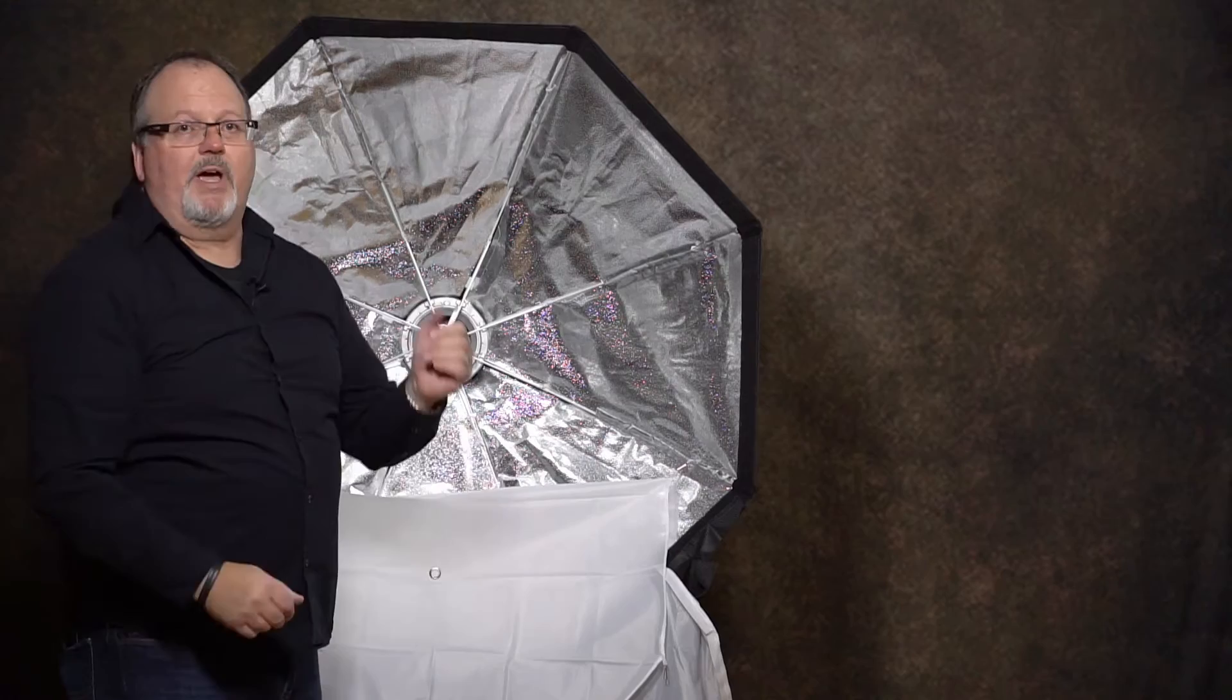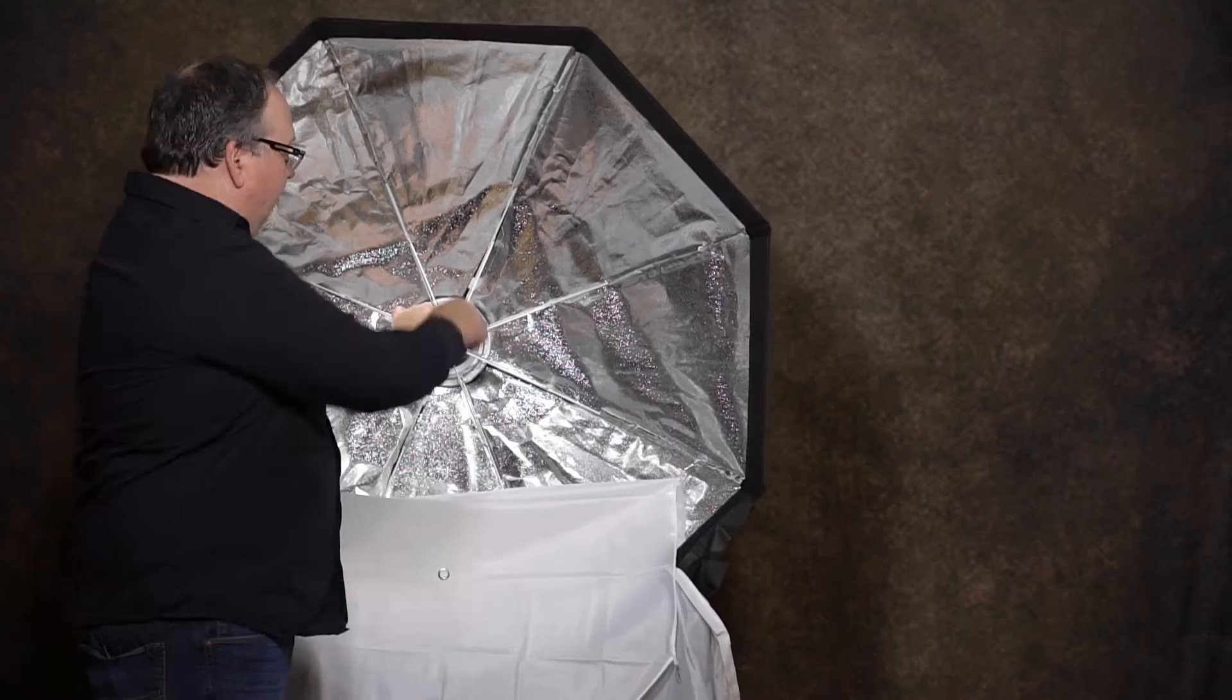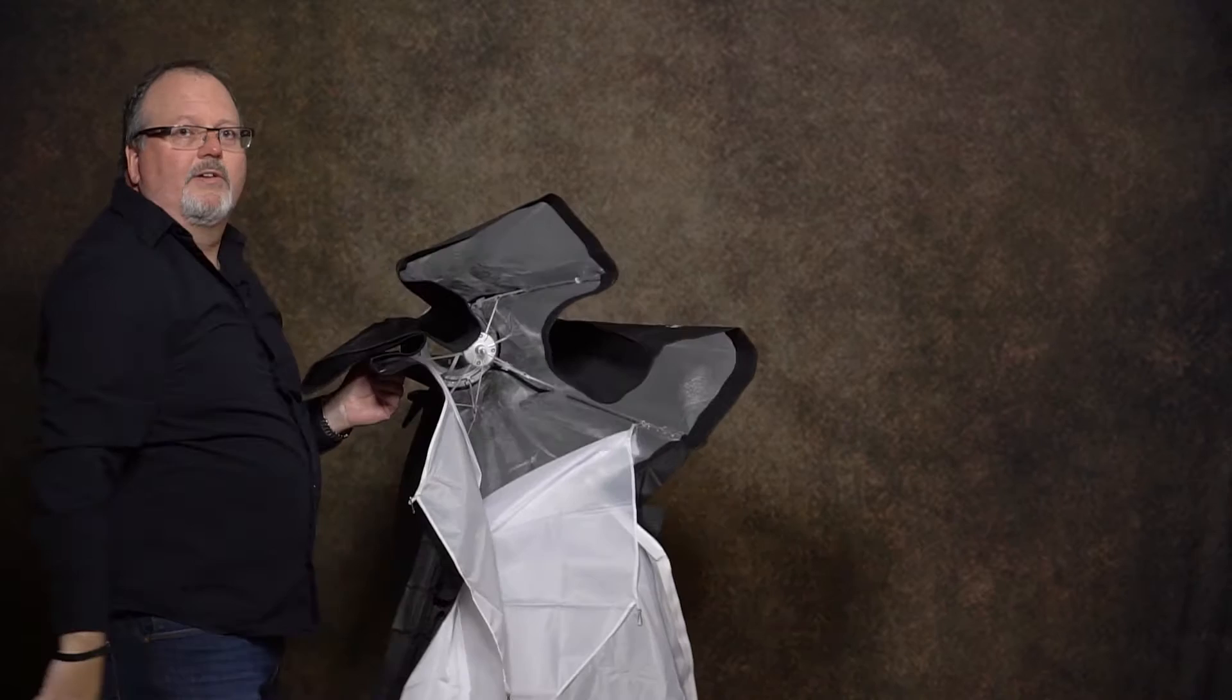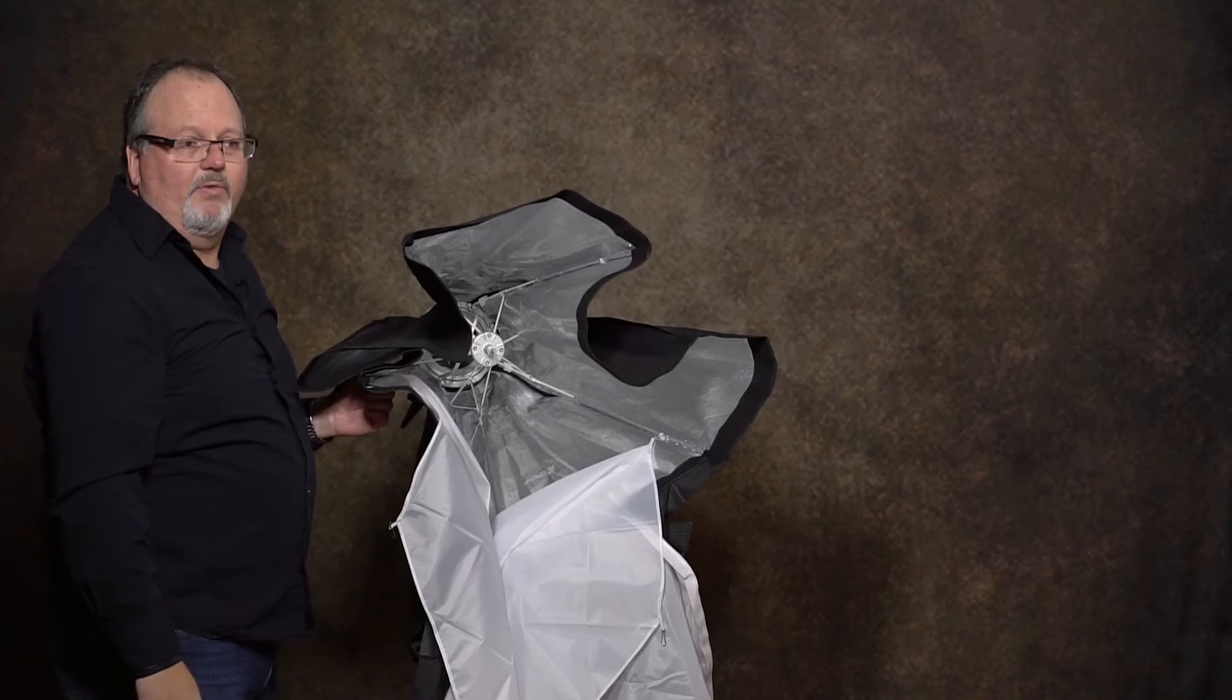To collapse the box, it's a matter of just taking the palm of your hand and your fingers, reaching back into the caging system, pressing down, press the release. Folds up just as simple as that. Release it from the Bowen's mount, throw it in your lighting bag, and you're ready to roll.